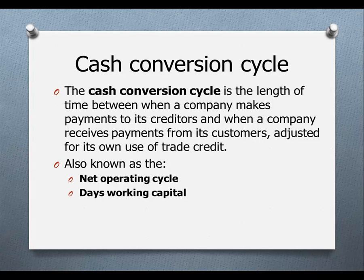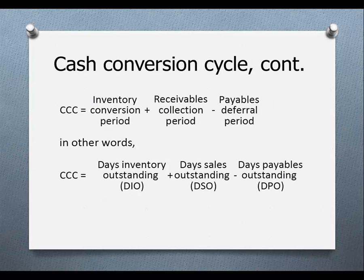The cash conversion cycle considers the fact that the company may not pay for their own inputs immediately — it may take them time to pay through the use of trade credit. They may buy something to put on the shelf but not have to pay their vendor immediately, perhaps in 30 or 60 days. So the cash conversion cycle takes the operating cycle and subtracts the amount of time that cash is freed from the payables. This is also called the net operating cycle and the days working capital. The cash conversion cycle is therefore DIO plus DSO minus days payables outstanding.